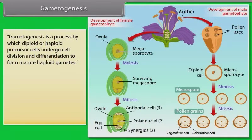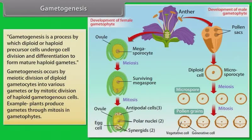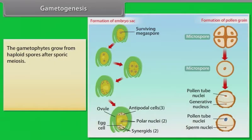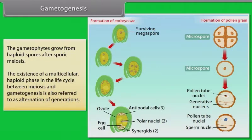Gametogenesis is a process by which diploid or haploid precursor cells undergo cell division and differentiation to form mature haploid gametes. Gametogenesis occurs by meiotic division of diploid gametocytes into various gametes, or by mitotic division of haploid gametogenous cells. Plants produce gametes through mitosis in gametophytes. The gametophytes grow from haploid spores after sporic meiosis. The existence of a multicellular haploid phase in the life cycle between meiosis and gametogenesis is also referred to as alteration of generations.